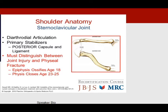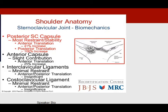The sternoclavicular joint plays an important role in the shoulder and you must distinguish between joint injury and physeal fractures. The epiphysis ossifies at age 18 while the physis closes even later at age 23 to 25. Its primary stabilizer and most important part is the posterior capsule and its ligaments, which resist posterior translation up to 106% when sectioned.